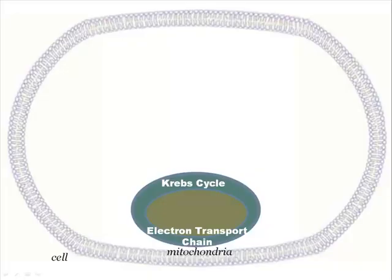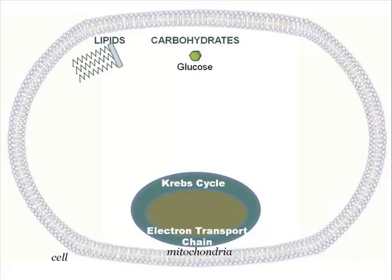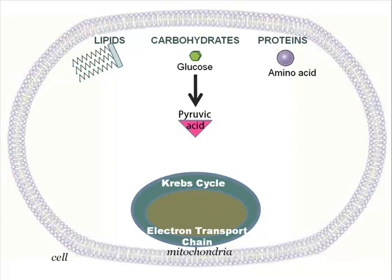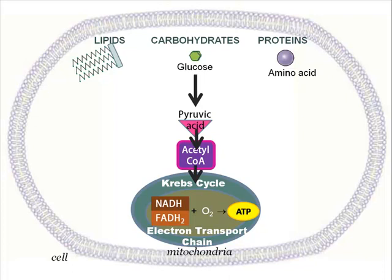The three main sources of energy for our cells are lipids, carbohydrates, and proteins. Carbohydrates enter the cell as glucose and go through glycolysis. The pyruvic acid produced by glycolysis is converted to acetyl-CoA to enter the Krebs cycle. The coenzymes produced along the way generate most of the ATP through the electron transport chain with the use of oxygen.